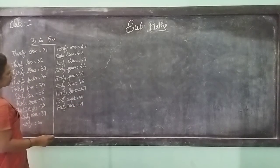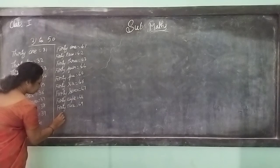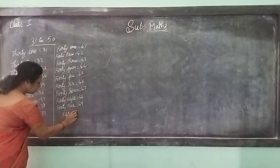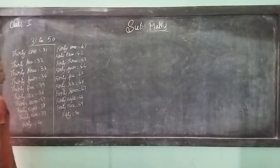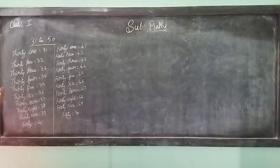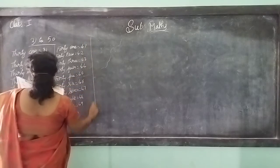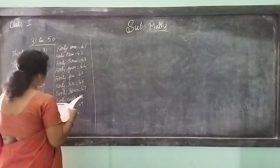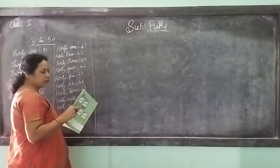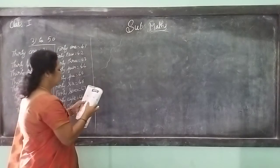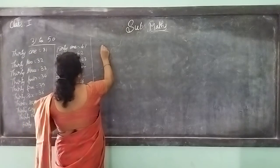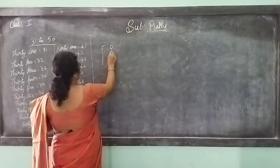Next is 50 - F-I-F-T-Y, 50. So we have learned to write the numbers in words from 1 to 50. Now the numbers shown above, we have to identify the tens and ones. OK children, tens and ones.